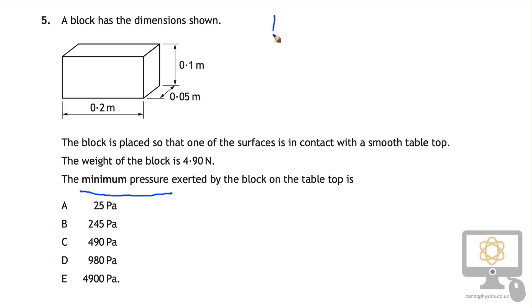So the formula for pressure is force over area. The force is equal to the weight of the block, which is 4.90.